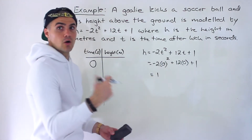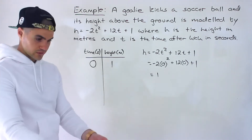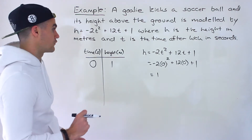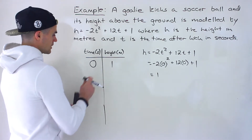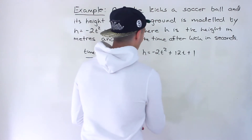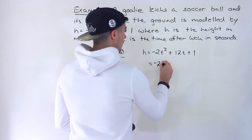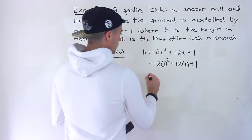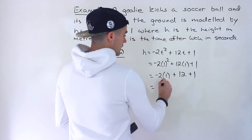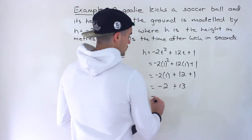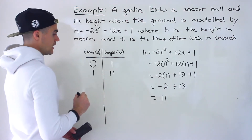So the soccer ball starts at a height of 1 meter, which makes sense — if a goalie is holding the ball, it's about 1 meter off the ground. Now for t = 1: we do the exponent first, 1 squared is 1, so we have negative 2 times 1 plus 12 times 1 plus 1, giving negative 2 plus 13, which equals 11. So 1 second after the ball is kicked, the soccer ball has a height of 11 meters.